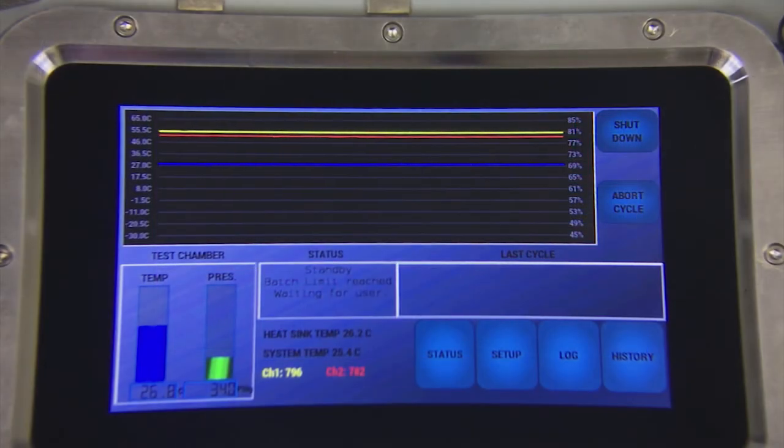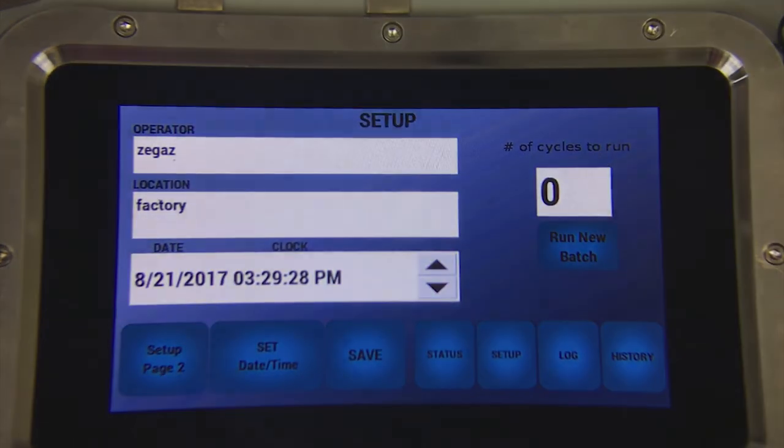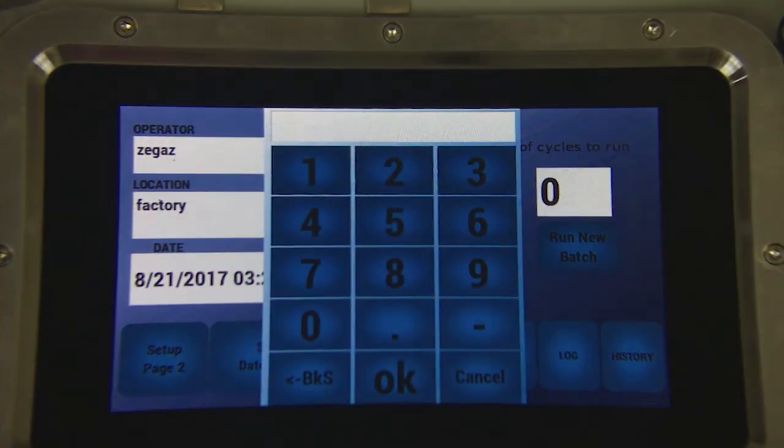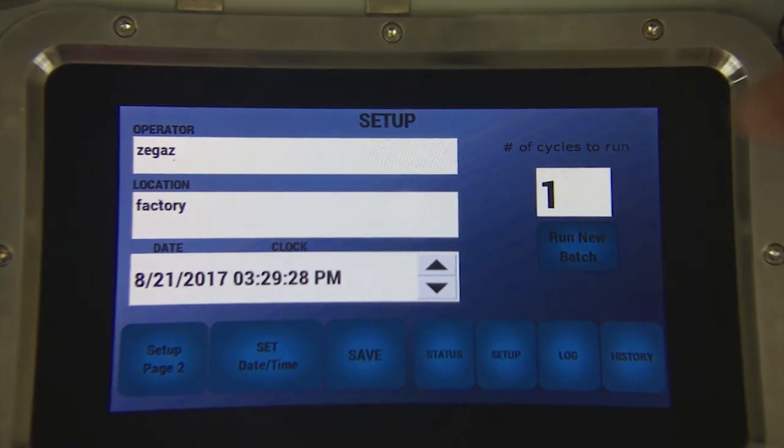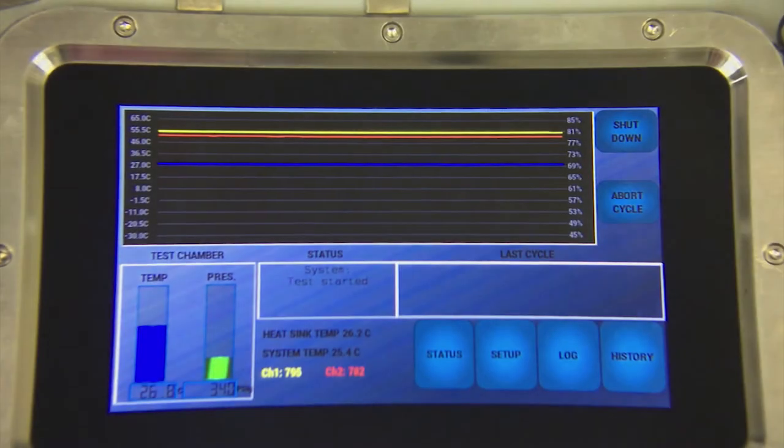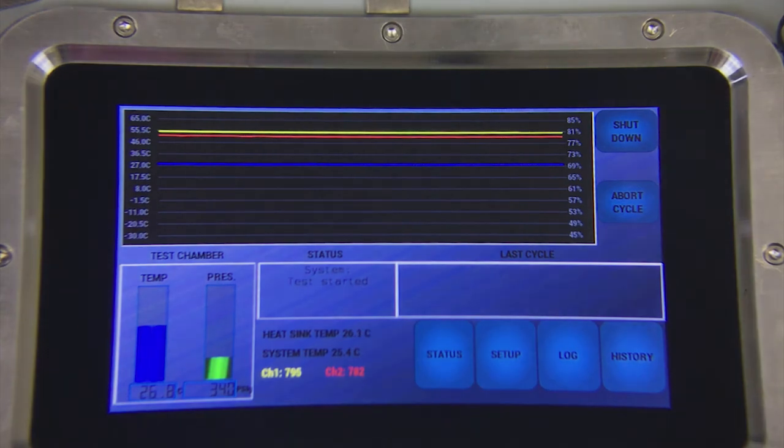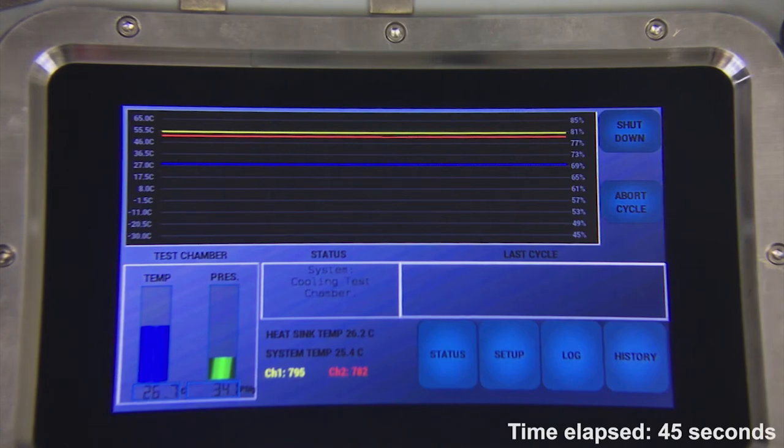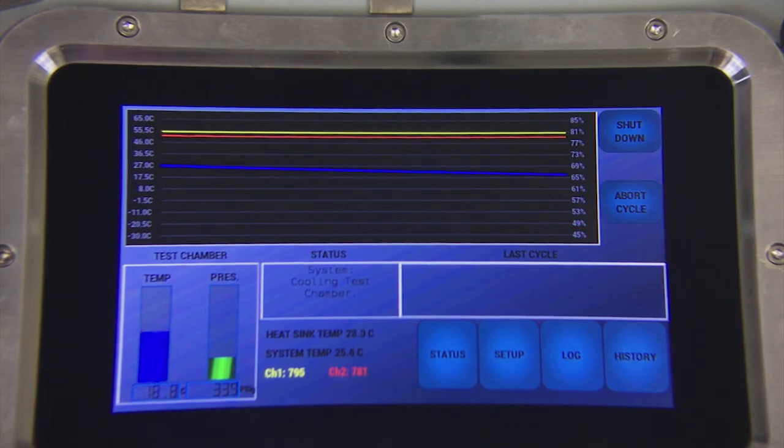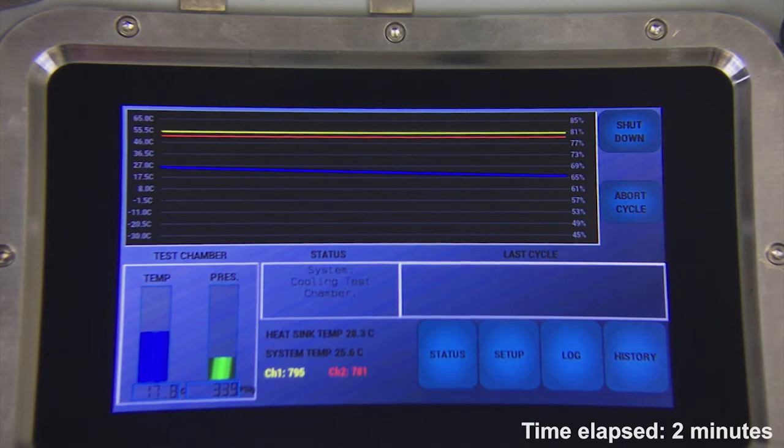Once you are ready to begin running test cycles, return to the setup page and select the number of runs you would like to perform. Push run new batch and return to the status screen. Note that the system status says test started. Once the cooler turns on, the status box will say system cooling test chamber. Notice the blue line on the graph begins to fall with the temperature of the cooler.